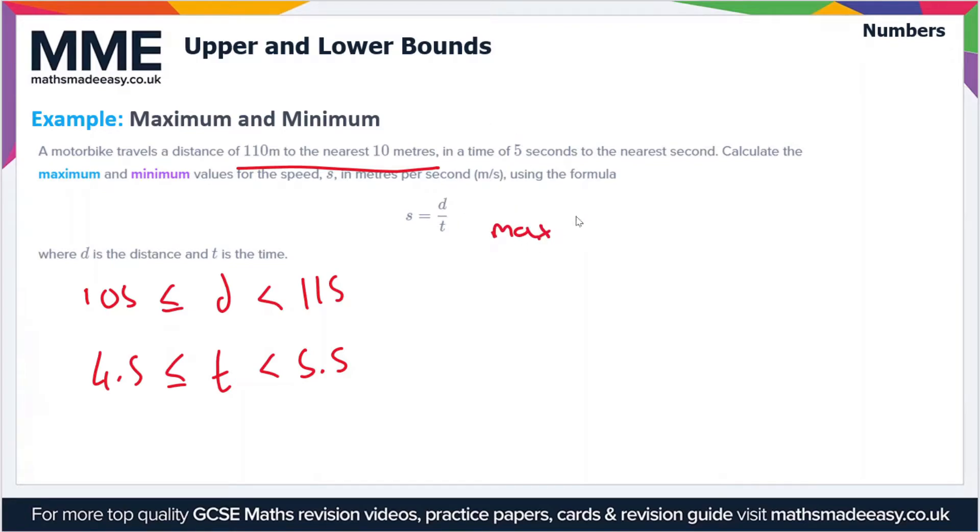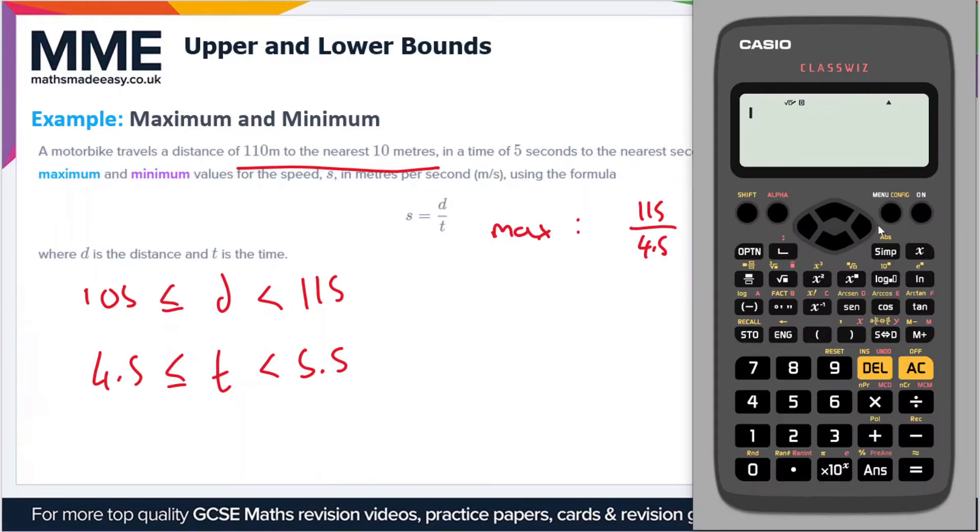Now we want to find the maximum and minimum values. Let's deal with the maximum value first. The maximum value of the speed is going to be when we have the largest value of the distance and the smallest value of the time, since we're dividing the distance by the time. So that's going to be 115 over 4.5, which I'm going to plug into my calculator. That gives us 25.5 recurring, so that's the speed in meters per second.